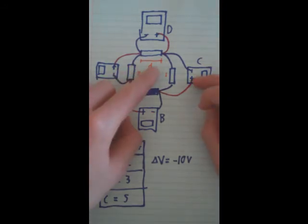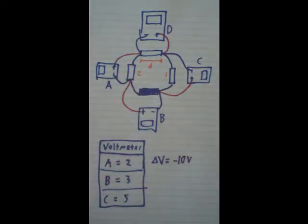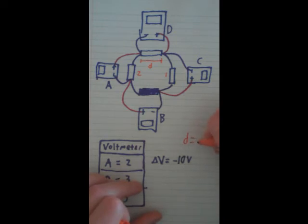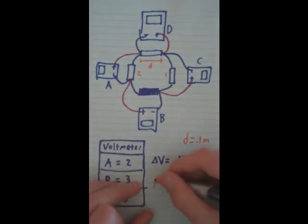Let's say this D is 0.1 centimeter. I mean, 0.1 meter. And, we want to find the E field inside this resistor.